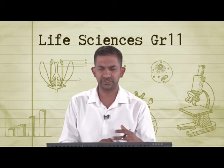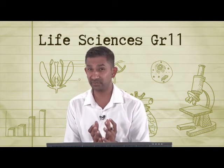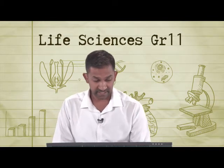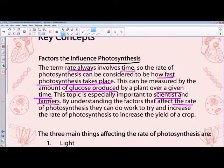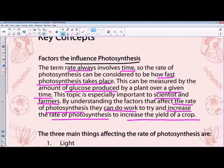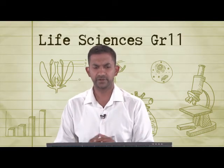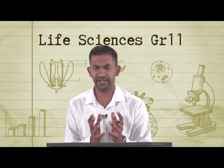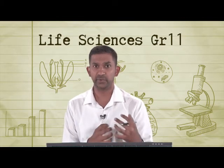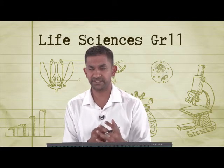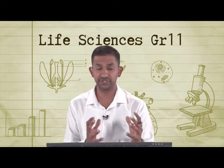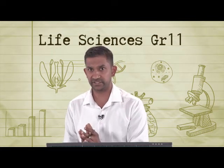Oxygen is also produced, so we could measure the amount of oxygen produced as an indication of the rate of photosynthesis. This topic is important to scientists and farmers — by understanding the factors that affect the rate of photosynthesis, we can work to increase it and thus increase crop yield. If we understand and manage the factors that influence the rate of photosynthesis, we can maximize and optimize how plants grow so that the final crop produced is of maximum yield.